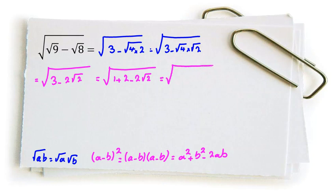And you can see it is square root of 1 squared plus square root of 2 squared minus 2 times square root of 1 times square root of 2.